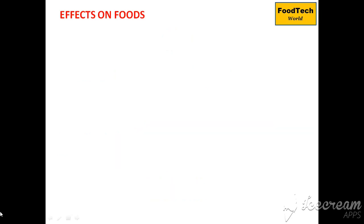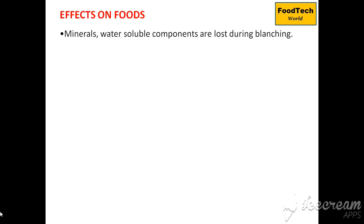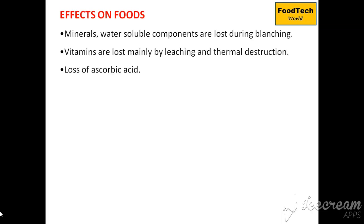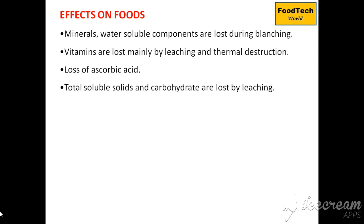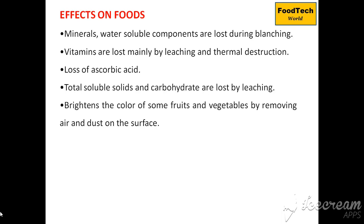Regarding the effects of blanching on foods: minerals and water-soluble components such as vitamin B and vitamin C are lost during blanching through leaching and thermal destruction. Total soluble solids and carbohydrates are also lost by leaching. Blanching brightens the color of some fruits and vegetables by removing air and dust from their surfaces.